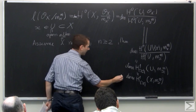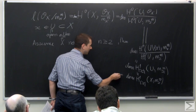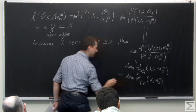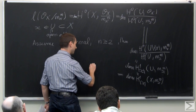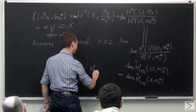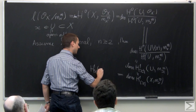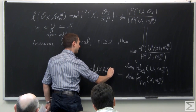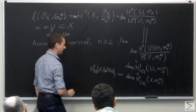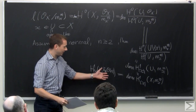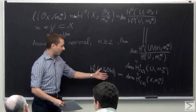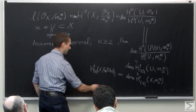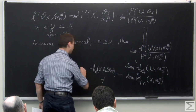Now we see this as an invariant of m_x. To relate this to the blow-up, we see the maximal ideal to the power m as a pushforward. So this is h^1 with support on x of the pushforward O(m), where O(1) is the relative tautological bundle. This equality is true for large enough m.